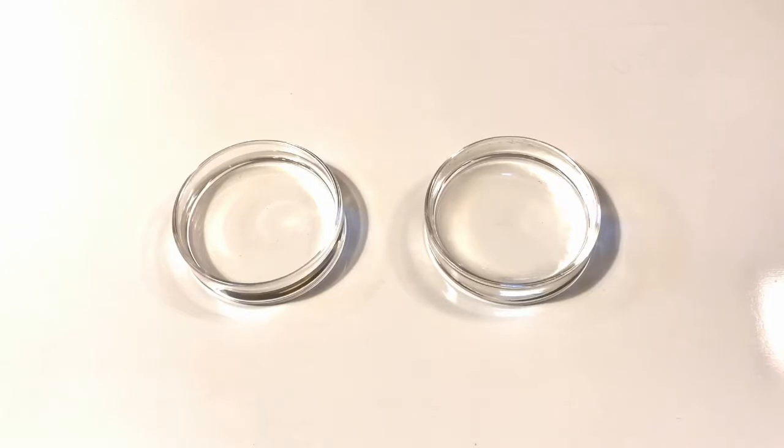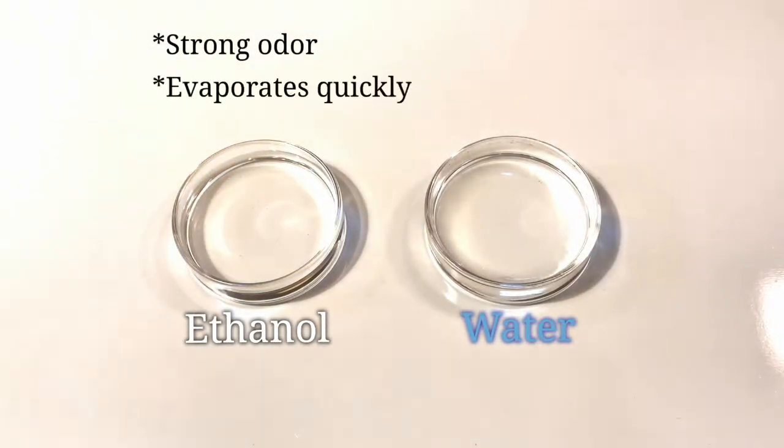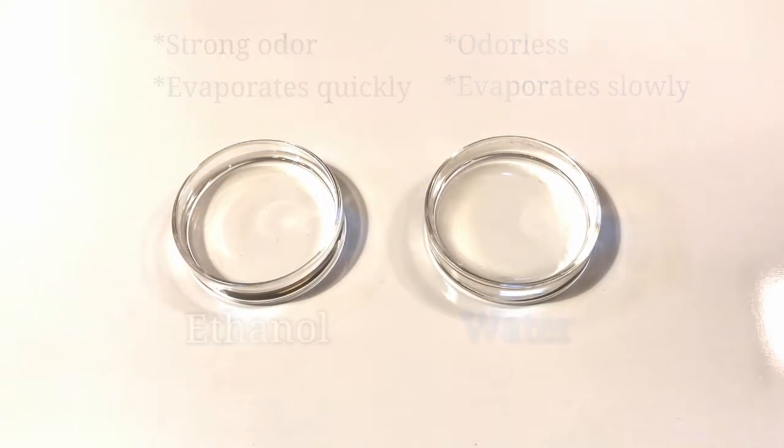To investigate ethanol it might be helpful to compare it to water. Here we have two glass dishes - ethanol on the left and water on the right. You can't really tell them apart just by looking, but there are other observations we can make. Ethanol has a strong, sharp chemical odor and it evaporates really quickly. Water is odorless and takes a lot longer to evaporate.